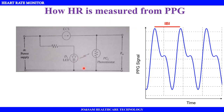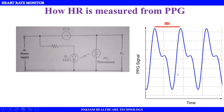As the blood flow decreases between heartbeats, the light changes — the energy inside the finger increases. The photoresistor resistance changes accordingly because the light intensity changes. The output voltage changes with the photoresistor resistance. We can measure the blood flow and calculate the heart rate directly from this signal.